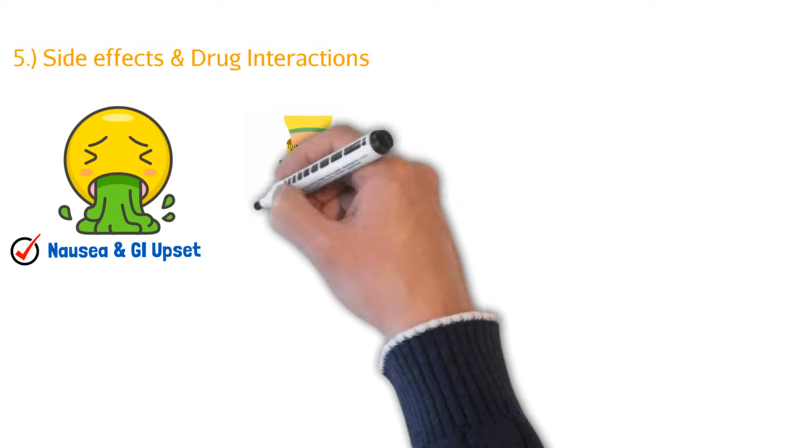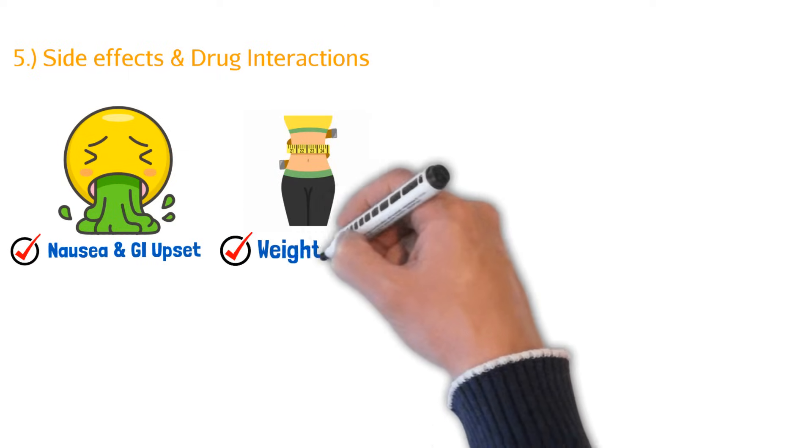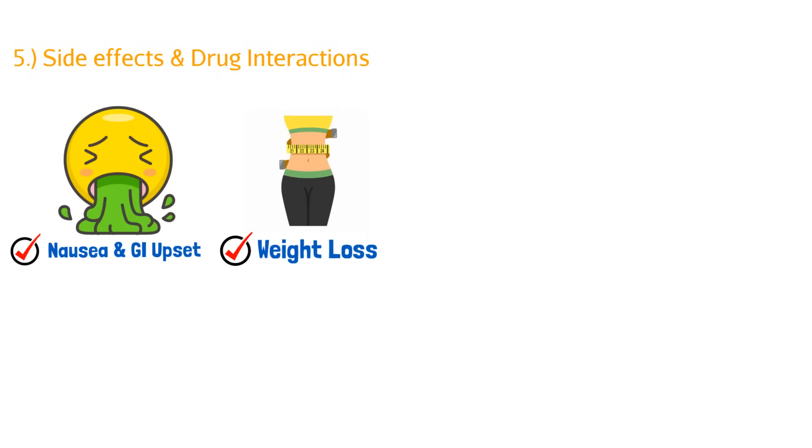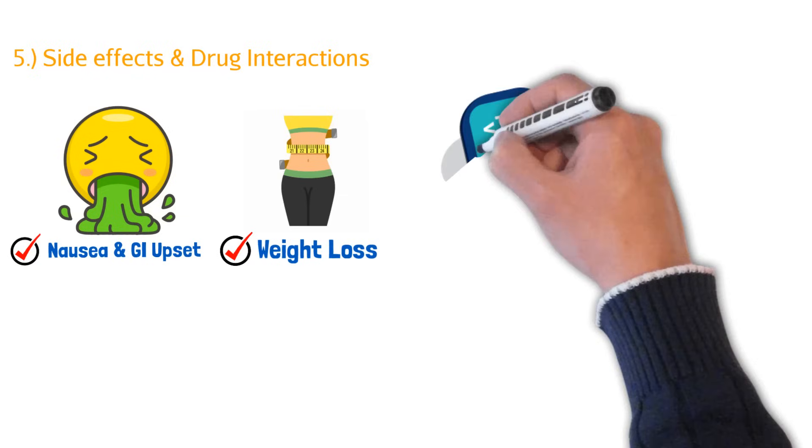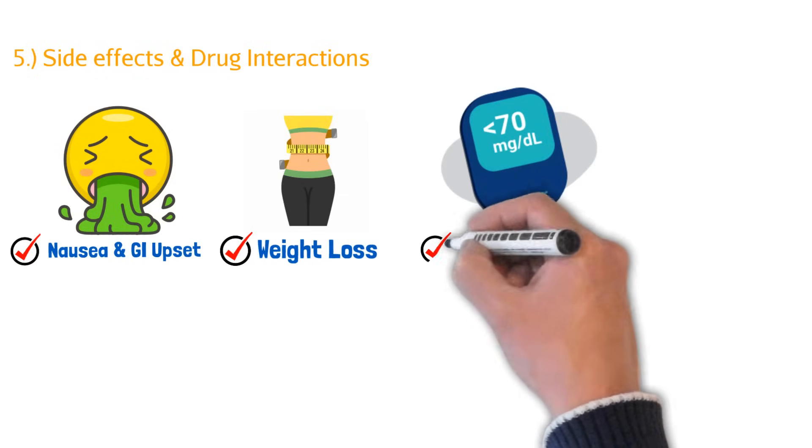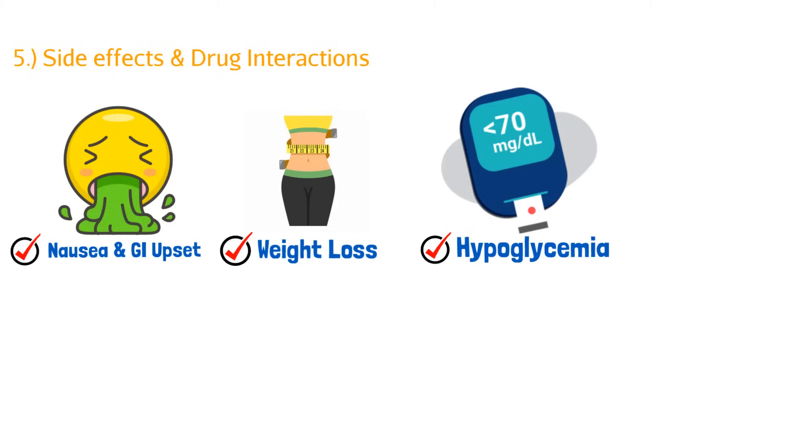The second thing is weight loss. And you might be saying, oh, why is that a side effect? Well, if you're taking the medication for diabetes, technically the side effect is weight loss. The third thing to watch out for is hypoglycemia. So your blood sugar's dipping too low. And remember, these GLP-1 agonists help produce insulin through the pancreas. So it makes sense that you want to be careful to not have your glucose go down too much.